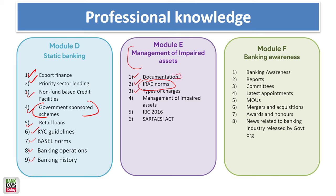In documentation, there are three laws: registration, stamp duty, and the limitation law. IBC and Sarfaesi Act are very, very important — most of the time the full form of Sarfaesi is asked in the exam. In Module F — banking awareness — whatever is happening in the banking and finance industry in the last six months is very important: appointments, mergers, and any banking industry news. Latest reports are important.